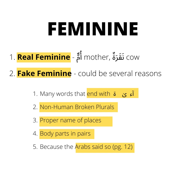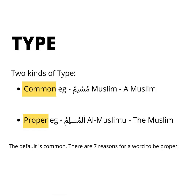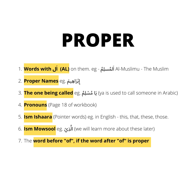This is in page 12 of the workbook. There are two kinds of type: common and proper. Muslimun — like a Muslim — is common, and al-Muslimu — the Muslim — is proper. The default is common, and there are seven reasons for a word to be proper: words that begin with Aliflam like al-Muslimu; proper names like Ibrahimu; the one being called like ya-Muslimu; pronouns; Ism-Ishara, which are the pointer words in English — this, that, these, and those; Ism-Mousul, which we learn later; and the word before-of, if the word after-of is proper.